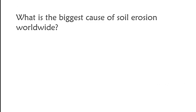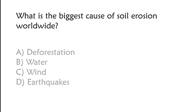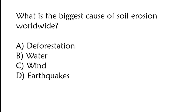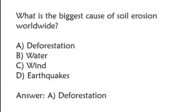What is the biggest cause of soil erosion worldwide? A) Deforestation, B) water, C) wind, D) earthquakes. The correct answer is option A, deforestation.